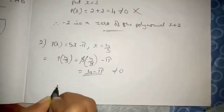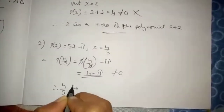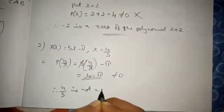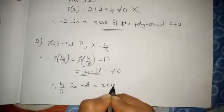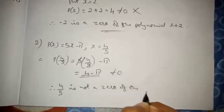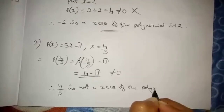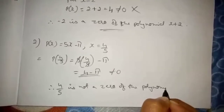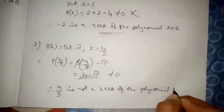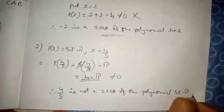Therefore 4/5 is not a zero of the polynomial 5x minus 5.